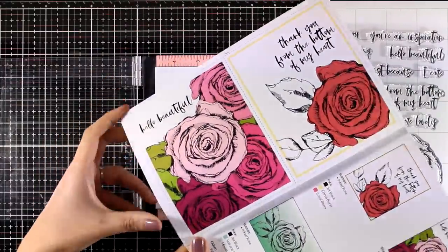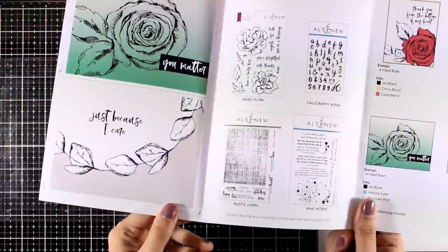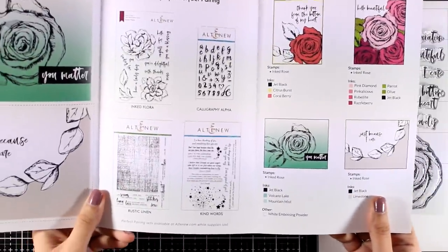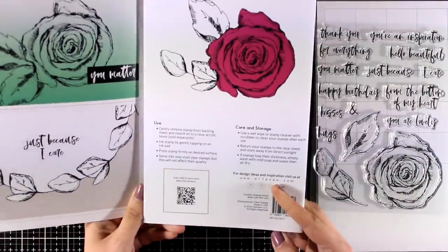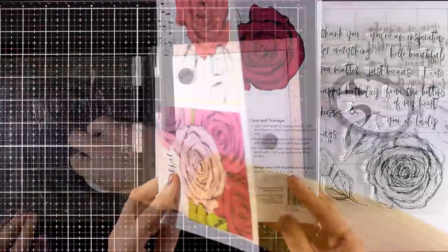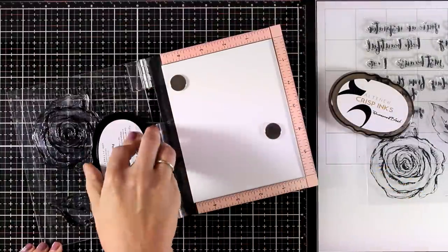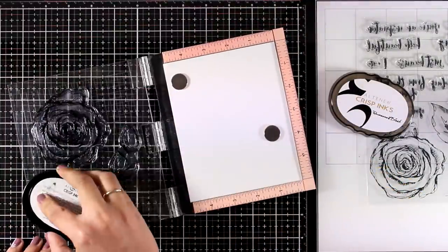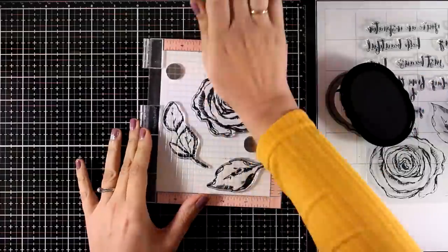So this is the Inked Rose stamp set and I am just showing you the leaflet to get an idea of different things that you can do with this stamp set. I am going to stamp it with my MISTI and I am using permanent ink here so that I can use my alcohol markers later on.